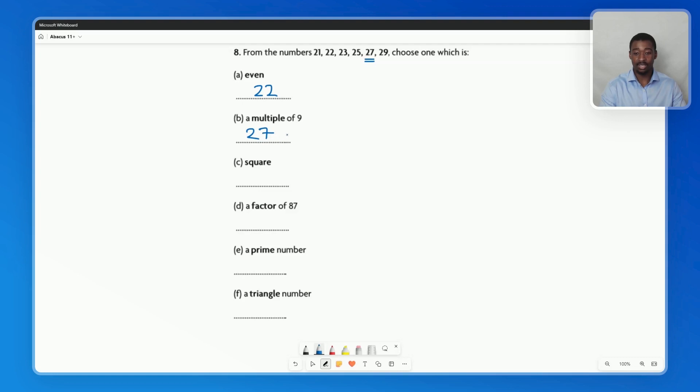So 27 can be divided wholly by 9. For part C we have a square number and this is going to be 25, because 25 is the result of doing 5 times 5 or 5 squared, multiplying 5 by itself.